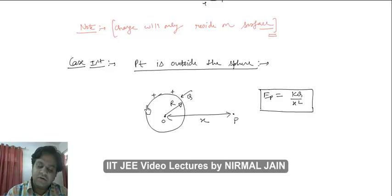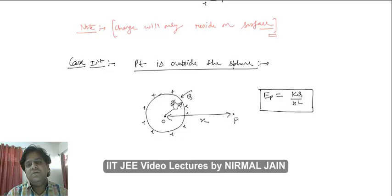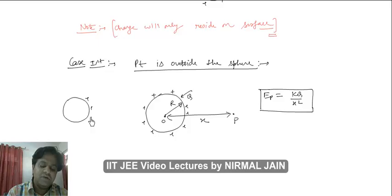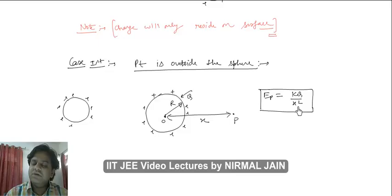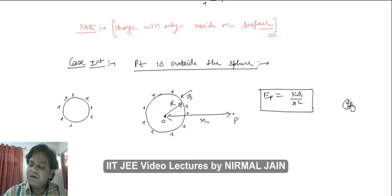The electric field at point p will simply be kq by x squared. This result comes from the fact that if the sphere is conducting — hollow or solid — the charge automatically resides on the surface. So you can consider the whole charge to be concentrated at the center.